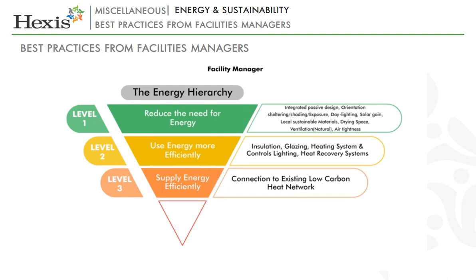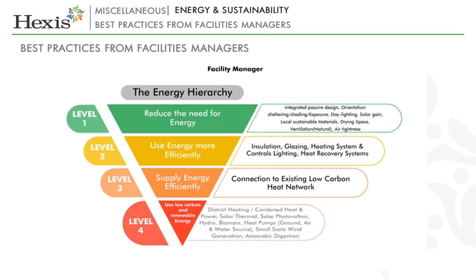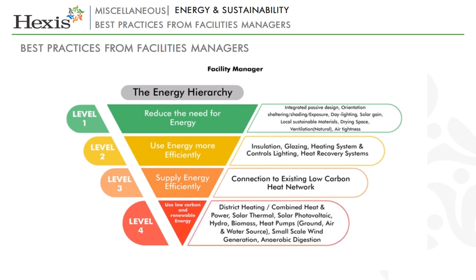Look at reducing the carbon impact of smaller procurement choices — for example, specifying recycled paper, introducing a printing reduction policy, and selecting local seasonal food for meetings. As a central point of information for the premises, ensure that indirect carbon emissions are reduced by promoting sustainable transport to and from the premises where possible.